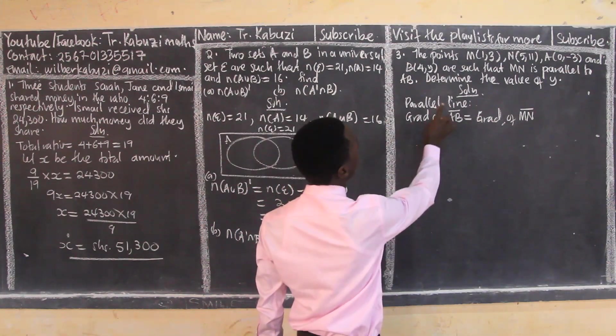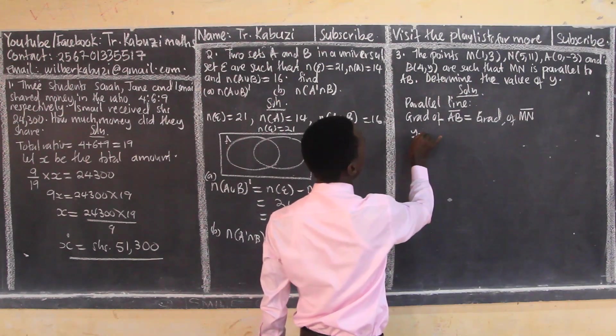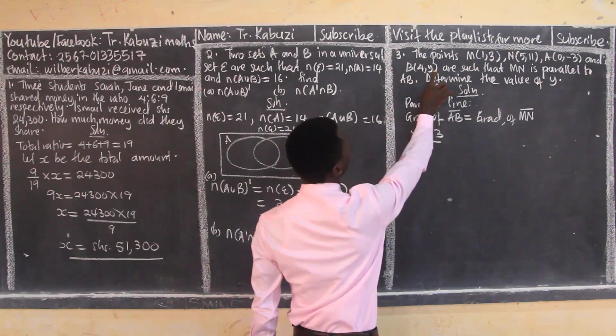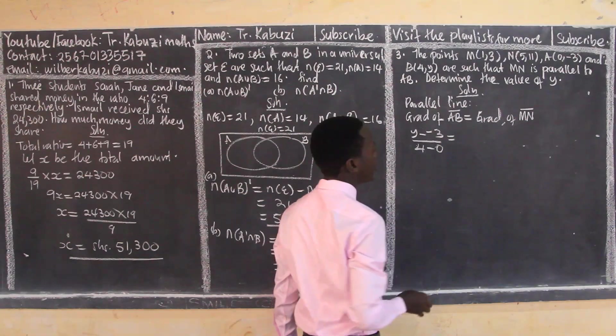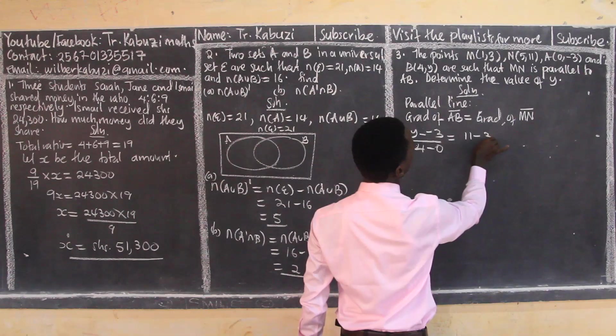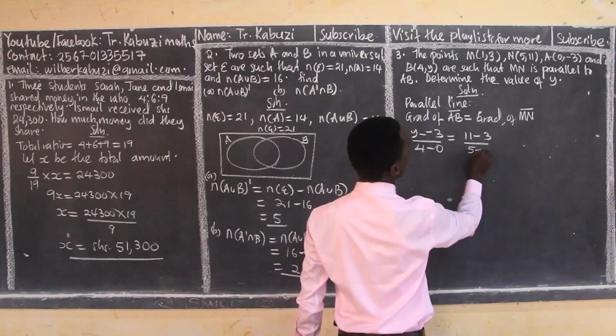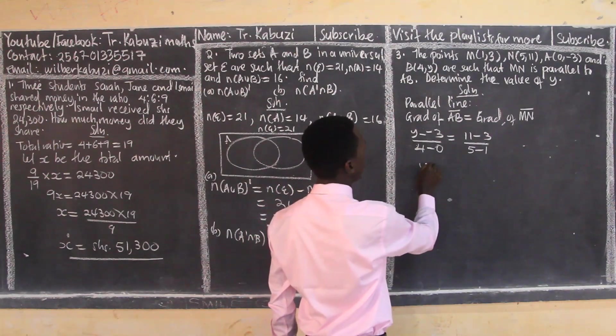So AB, we have our point A. I would say change in y, which will be y minus negative 3, over 4 minus 0, equaling to the gradient of MN. I will say 11 minus 3 over 5 minus 1. We simplify there. This will be y plus 3 over 4.